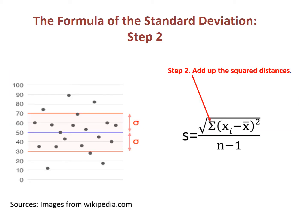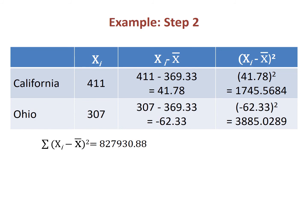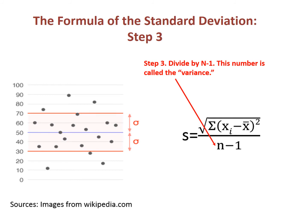Then we add up the squared distances, indicated by the Greek letter sigma. I did this calculation for all 50 states, and below the table is the sum of the squared distances for all 50 observations. We then divide this total by n minus 1. This spreads the distance over the number of points in the distribution. We subtract one to account for a degree of freedom — there are n points, and one degree of freedom is used by identifying the mean as a fixed point, so the remaining number of points is n minus 1. This number is also called the variance.